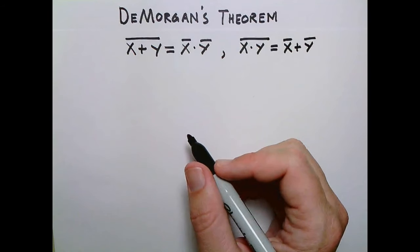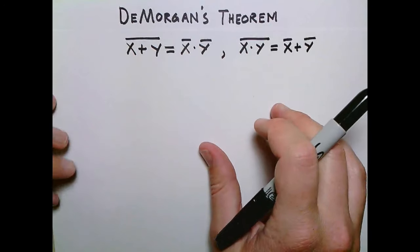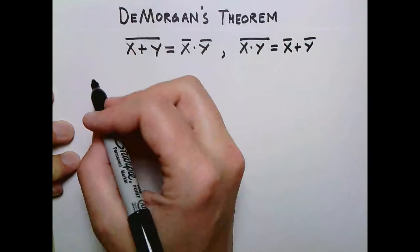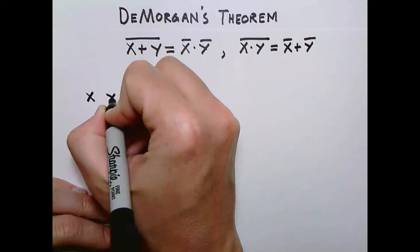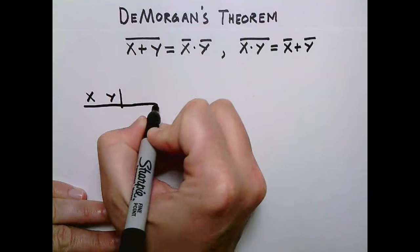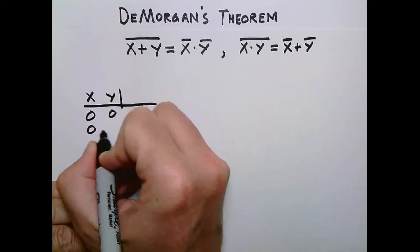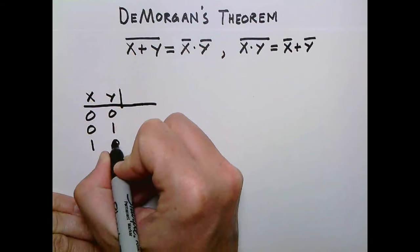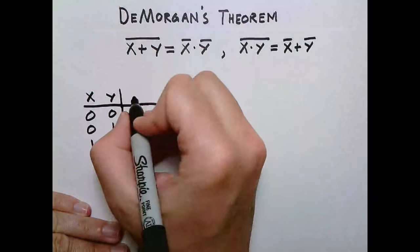Now, that might seem kind of crazy, so let's go ahead and use a truth table to show that these relationships are in fact true. So let's do the first one over here, and like we've done before, we have x and y. Let's do this in pieces, right? So first let's add these guys, our combinations: 0, 0, 0, 1, 1, 0, 1, 1.